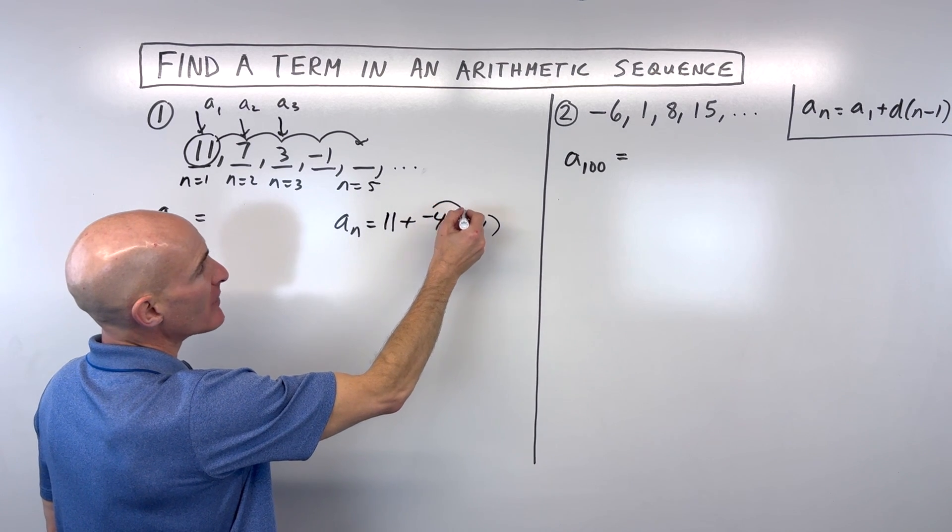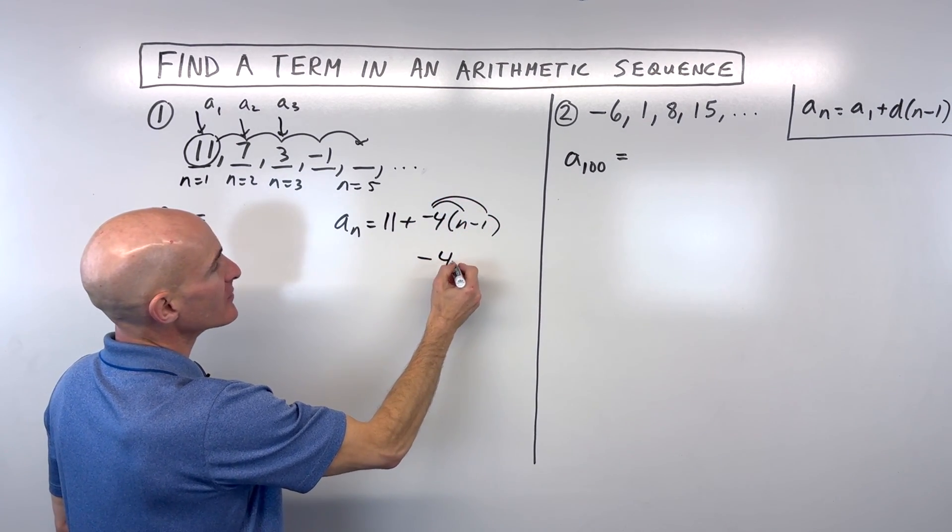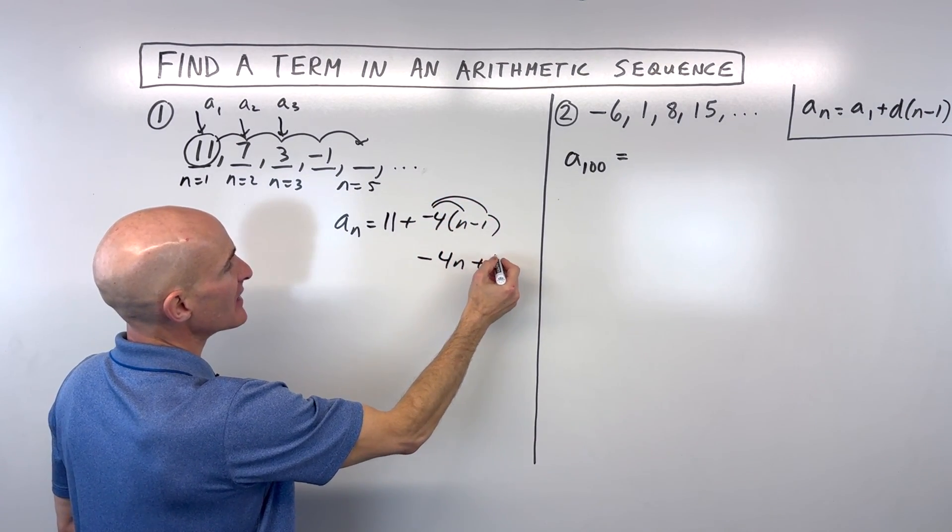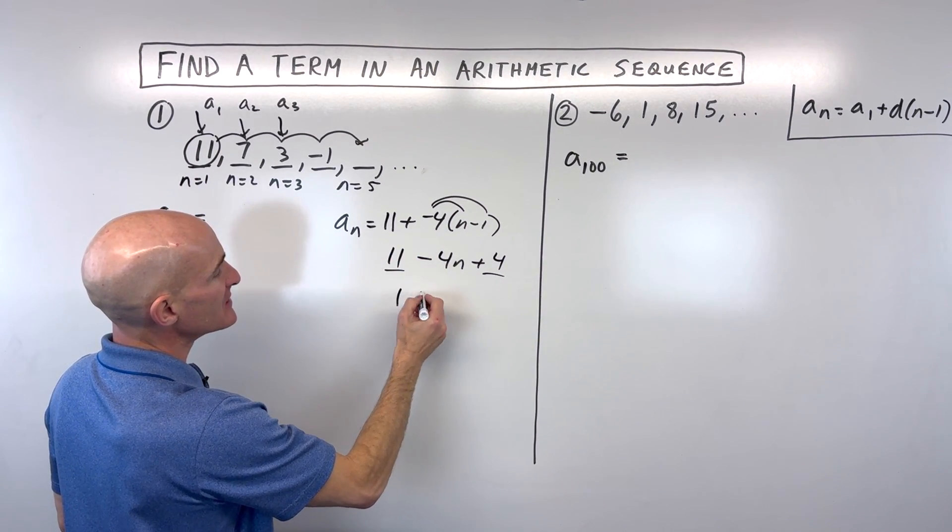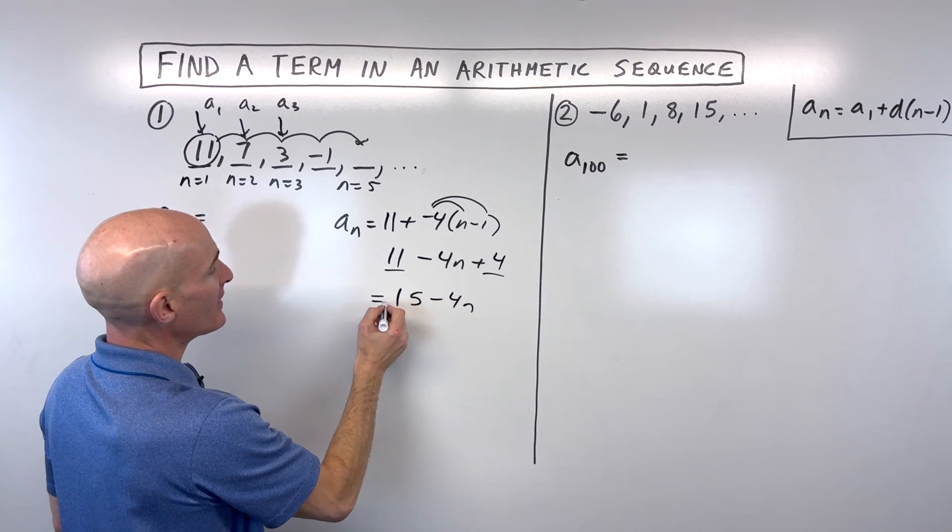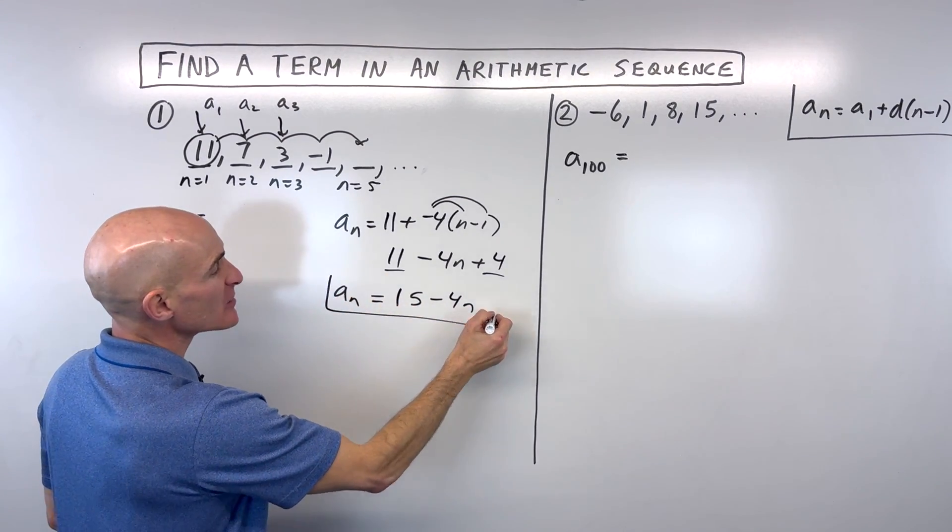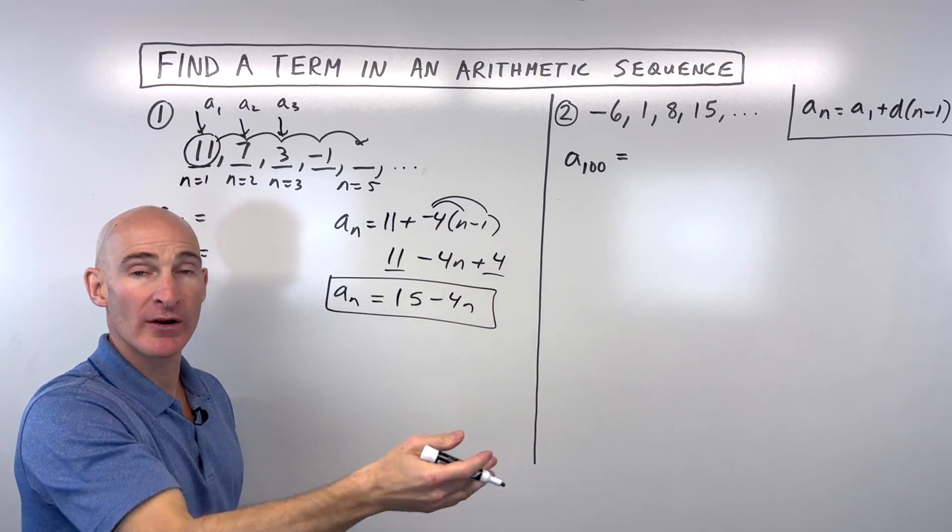Now we can simplify a little bit by distributing this negative 4 into the parentheses. Negative times a negative gives us a positive 4. And then combine like terms, so 11 plus 4 is 15, minus 4n. And this is what we call an explicit formula, meaning it takes us right to whatever term we want. If we want the hundredth term, we just put 100 in for n.